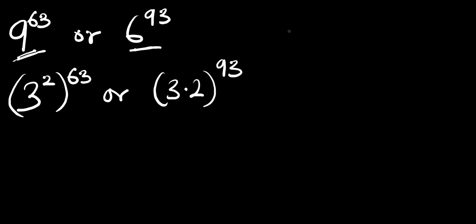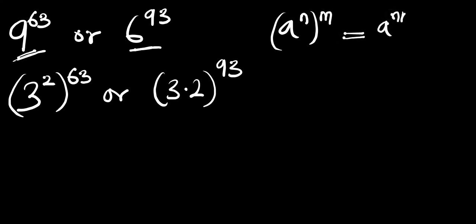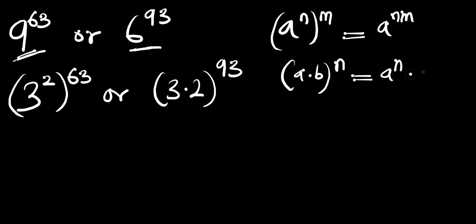Right now we are going to make use of two identities. If you have (a to the power of n) to the power of m, this equals a to the power of n times m. Also, if you have (a times b) to the power of n, this equals a to the power of n times b to the power of n. We are going to apply these two identities here.